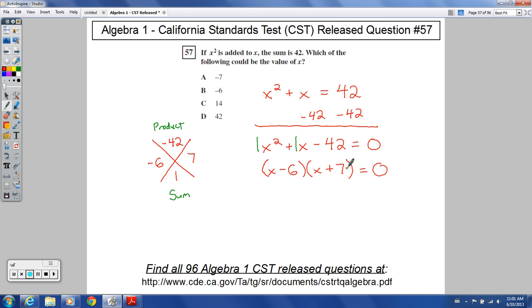You could also have this factor equal to 0. If x plus 7 altogether was 0, this whole set of parentheses would be 0, and 0 times whatever that is would still equal 0.